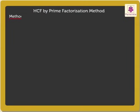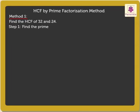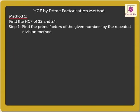Method 1: Find the H.C.F. of 32 and 24. Step 1: Find the Prime Factors of the given numbers by the Repeated Division Method. First, find the Prime Factors of 32. Begin with the smallest prime number, 2.